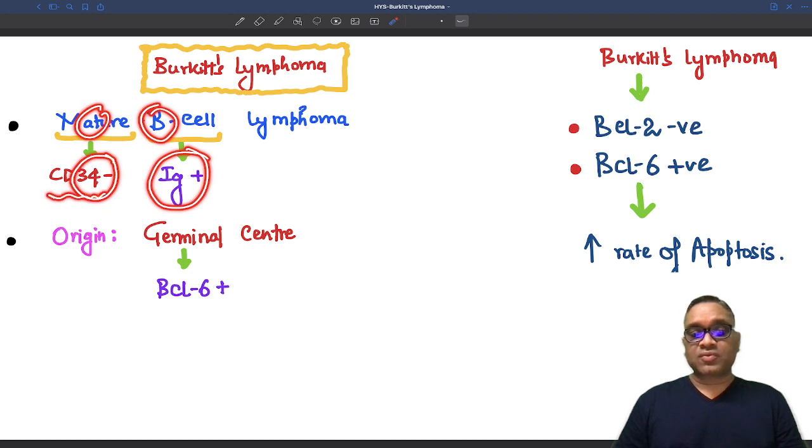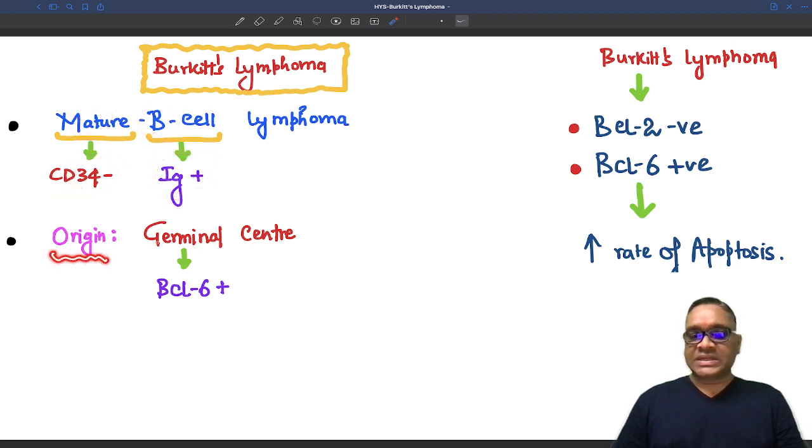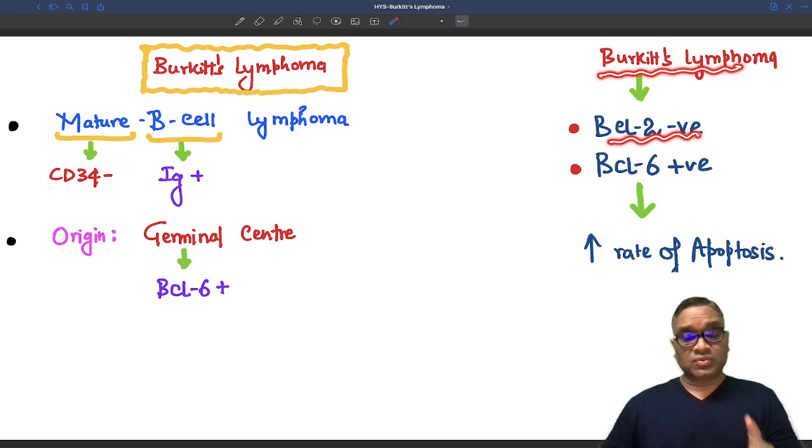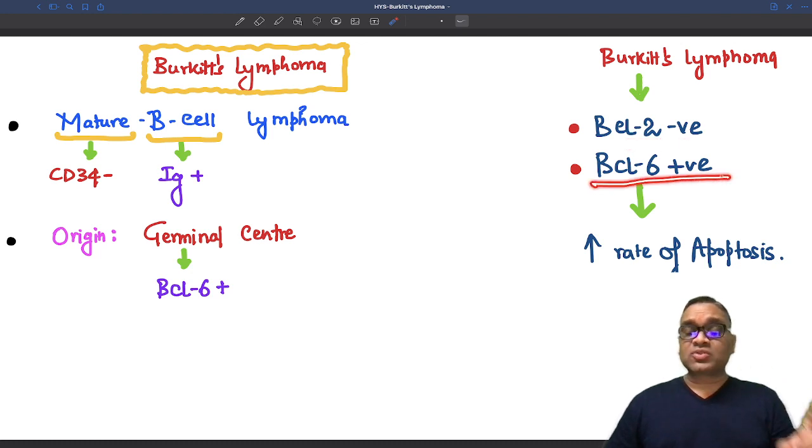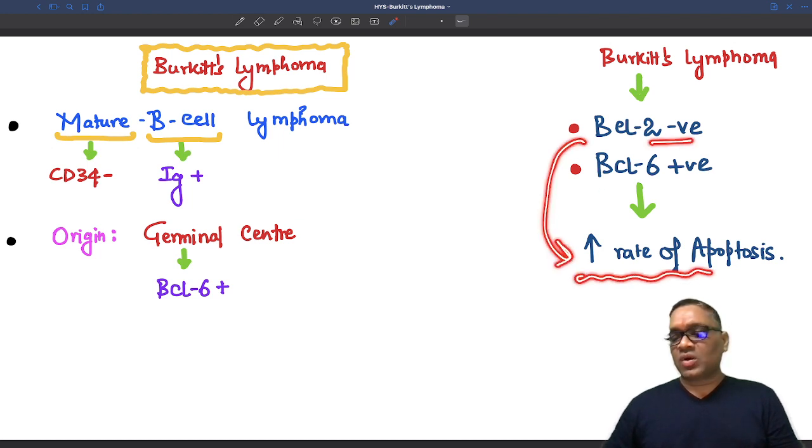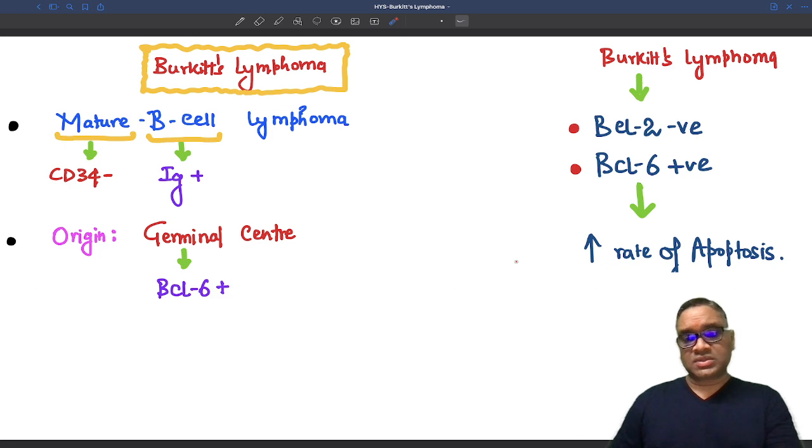They are CD34 negative and immunoglobulin positive lymphoma. Their origin is from germinal center and that is why they will be BCL6 positive. Burkitt's lymphoma is BCL2 negative, so remember, it's very important. Anti-apoptotic BCL2 is negative, but they are arising from the germinal center, so BCL6 will be positive. Because of this, there is an increased rate of apoptosis in this tumor.